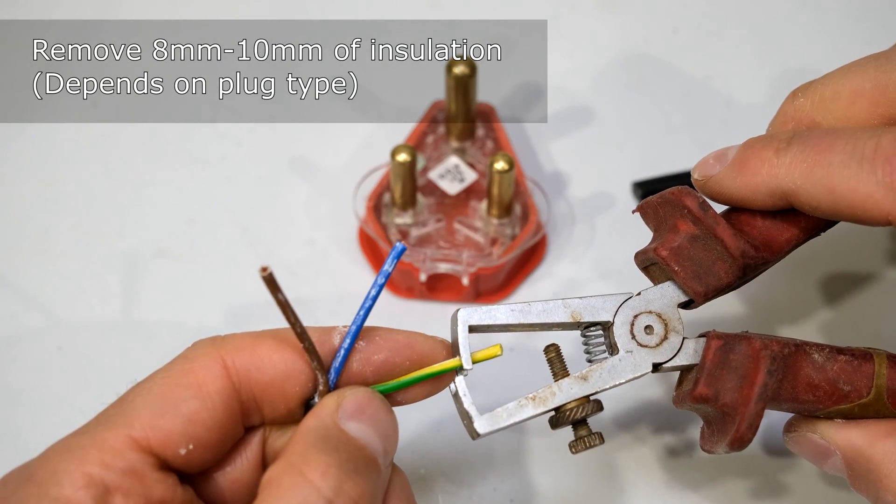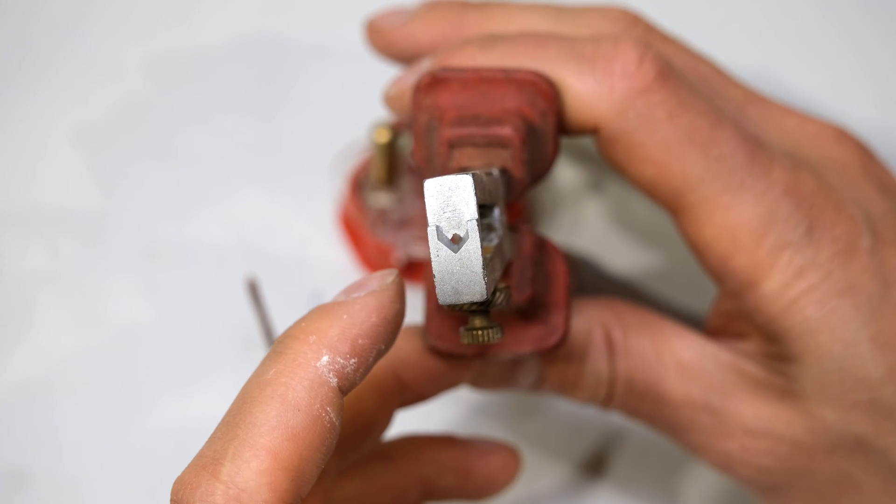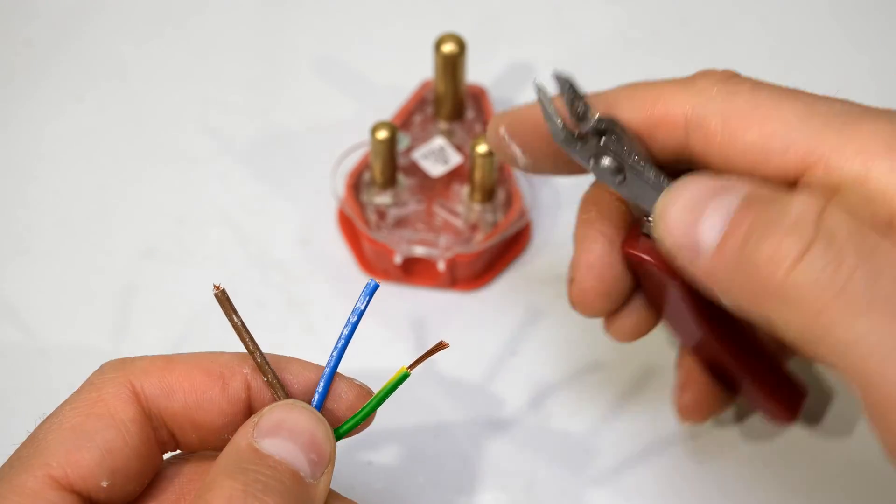Now you take wire strippers and you remove about 10 millimeters of the insulation. The reason we use wire strippers is you can see there's a hole there and then it doesn't cut through the copper. If you don't have wire strippers, you can use side cutters.